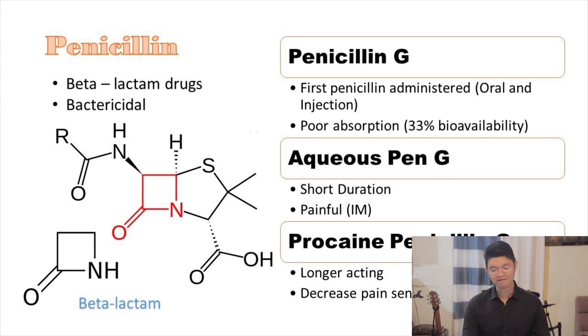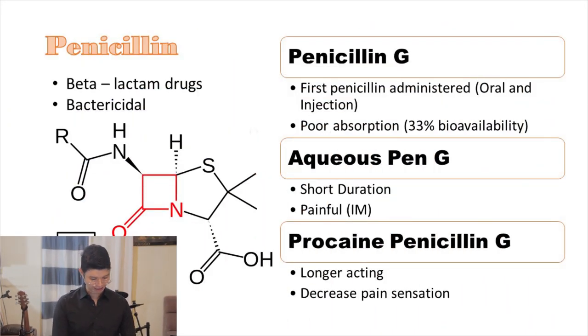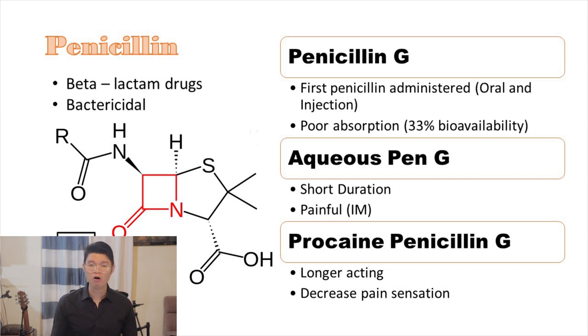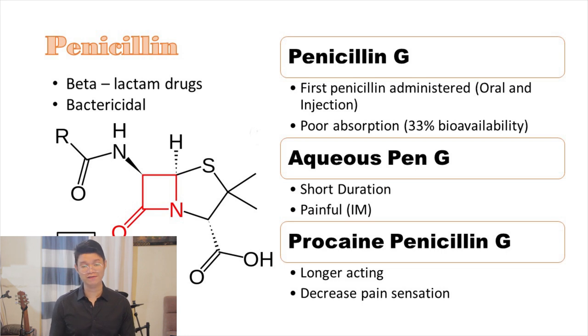That's why it's important to consider what infective agent is present among your clients. A general consideration is that we need to have our patient undergo a culture and sensitivity test — a laboratory procedure determining the causative agent and what particular medication that microorganism is sensitive to. Specific forms of penicillin: Penicillin G was the first penicillin, administered both orally and parenterally; however, it was found to have a bioavailability of only about 30 percent.